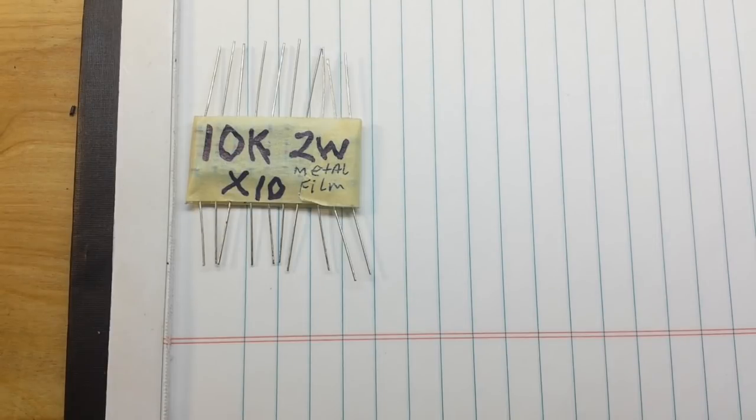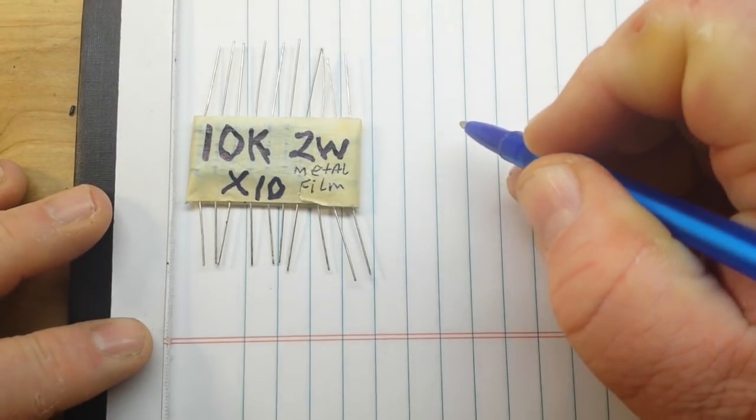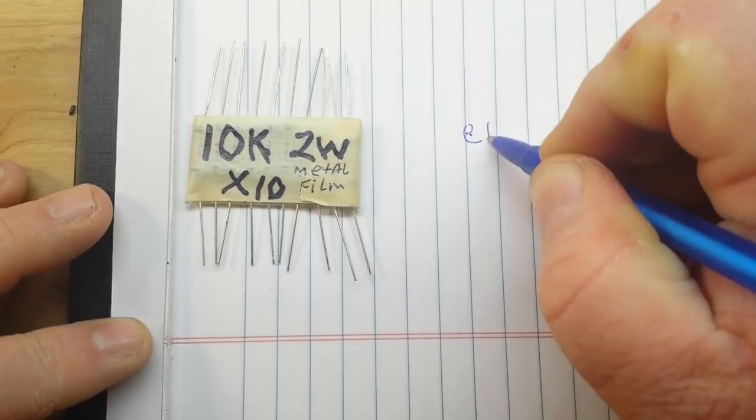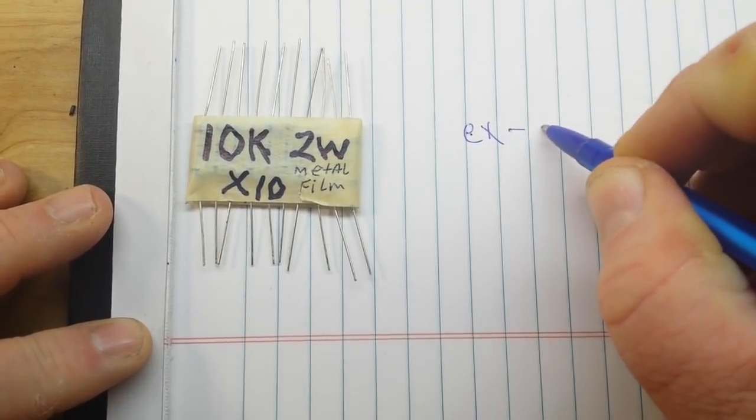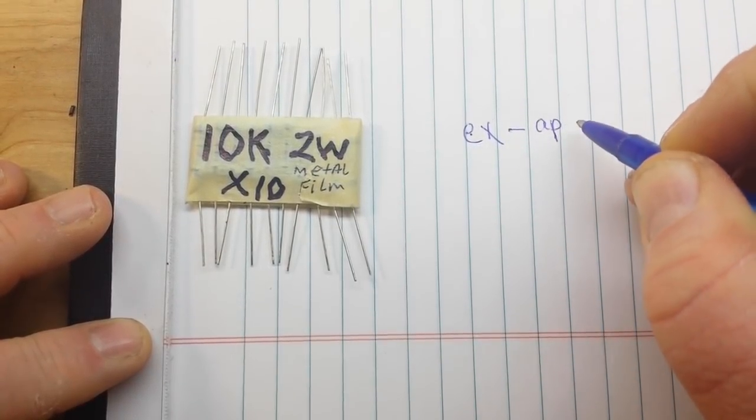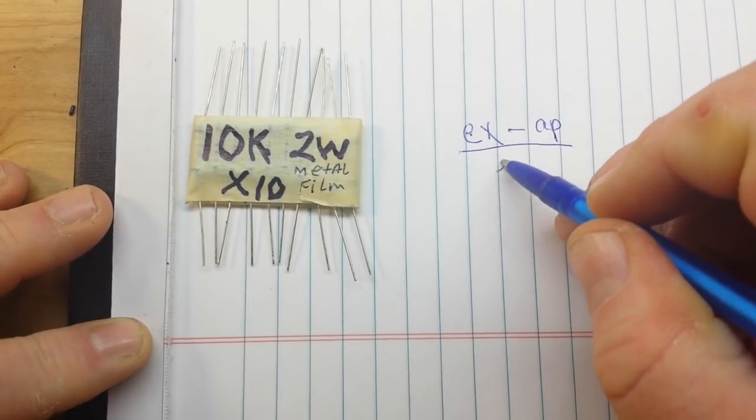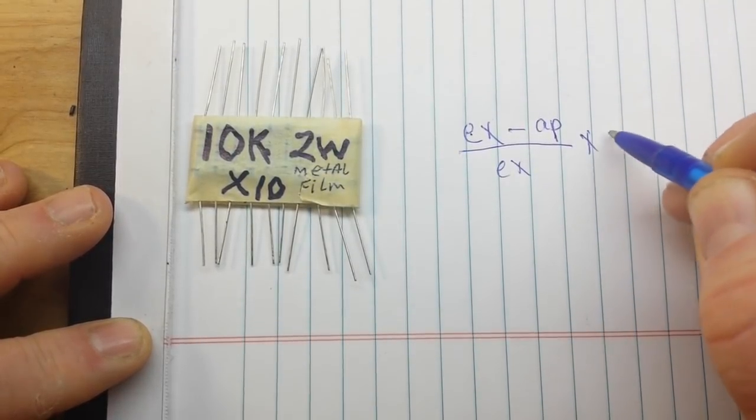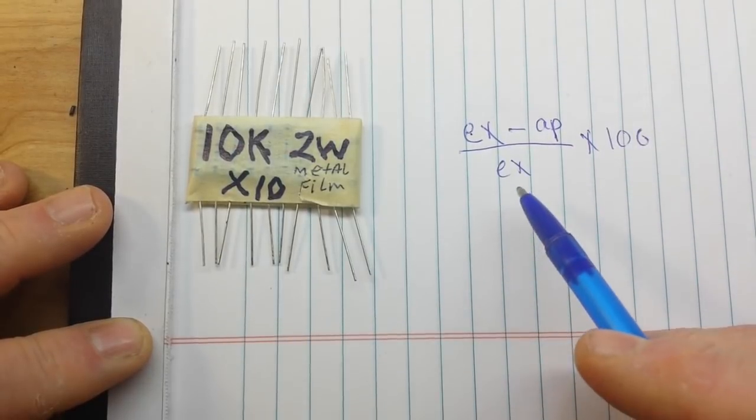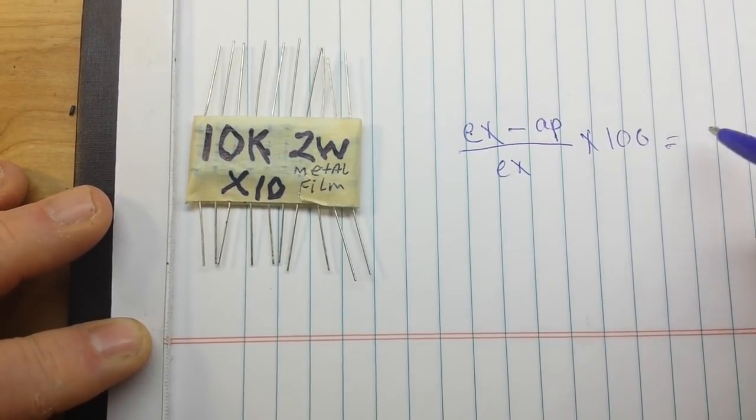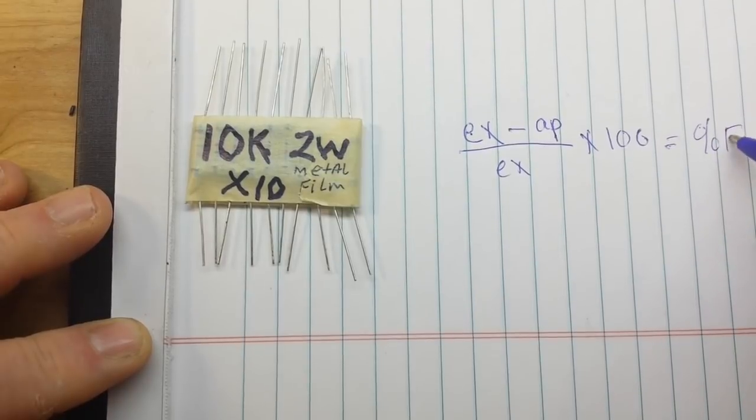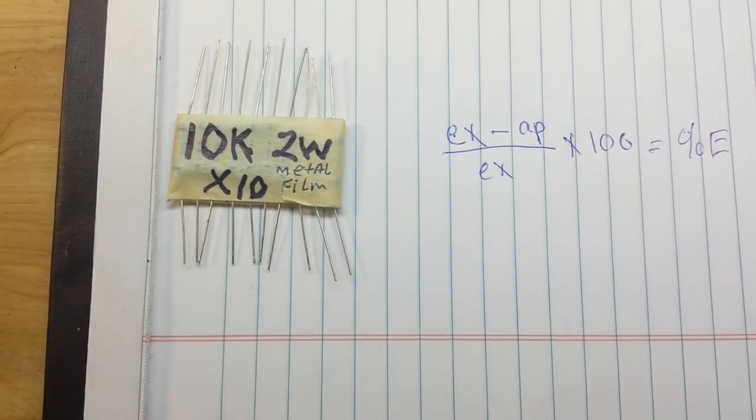So what we're going to do is we are going to find the percentage of error we have. We're going to find that with a little formula by taking the exact measurement minus the approximate over the exact, multiplying it by 100, and that will give us our error percentage. We'll be able to tell exactly how close we are within the accuracy of the equipment we have.